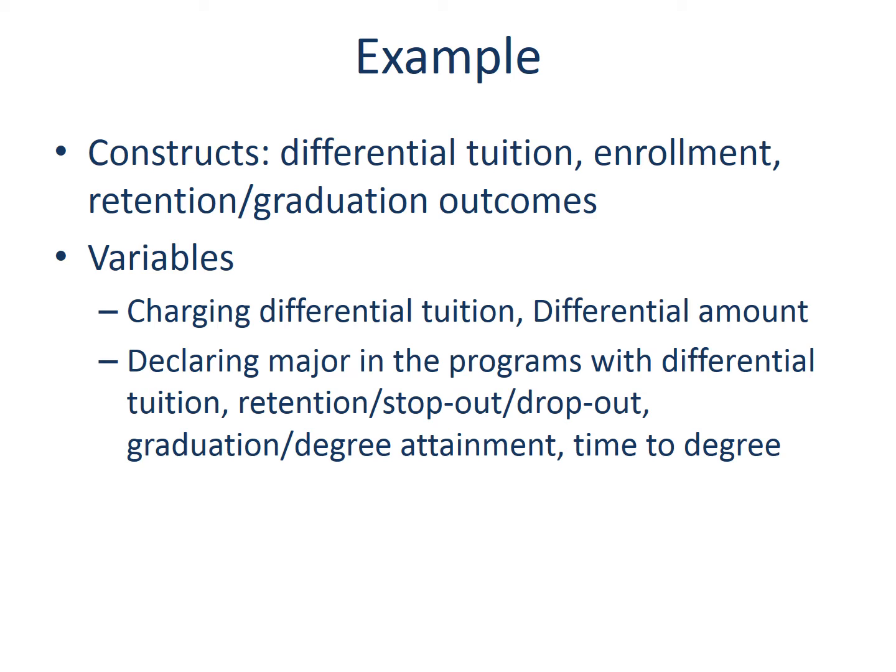The constructs will be differential tuition, enrollment, and retention and graduation outcomes. We can operationalize those concepts with variables including whether a program charges differential tuition and how much the additional tuition is. We can also measure whether a student declares a major in programs with differential tuition, and track retention, stop-out, drop-out, graduation, degree attainment, and time to degree as other variables.